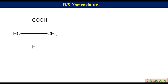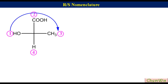Suppose we have lactic acid represented by Fisher projection formula and we have to find out its absolute configuration. Determine the priority of groups attached to the chiral center and label them as 1, 2, 3, and 4. Here the hydroxyl group is priority 1. Draw an arrow from 1 to 3 via 2. Here the 4th priority group H is on the vertical line and the direction of arrow is clockwise, so the absolute configuration will be R.